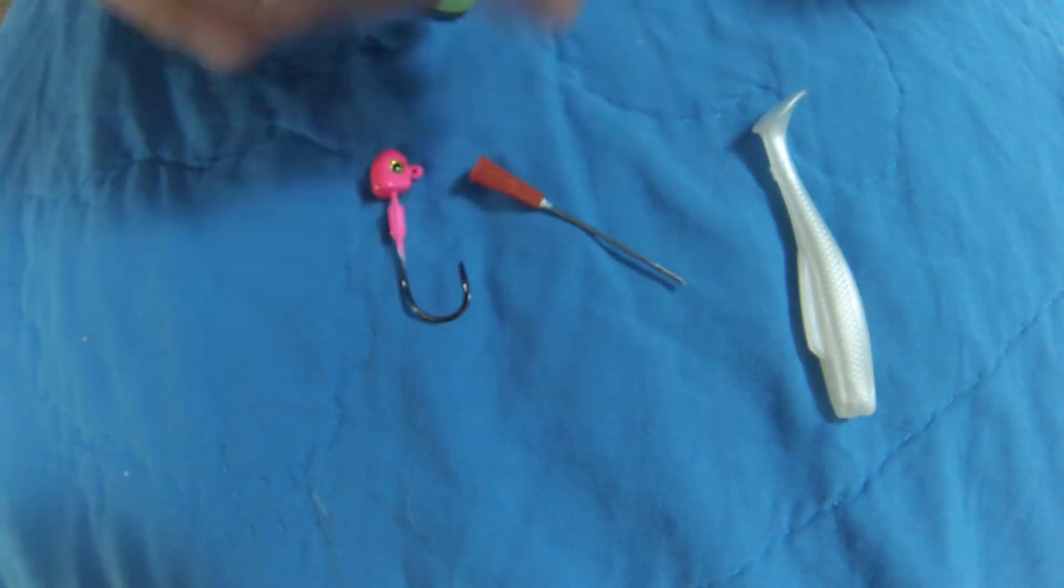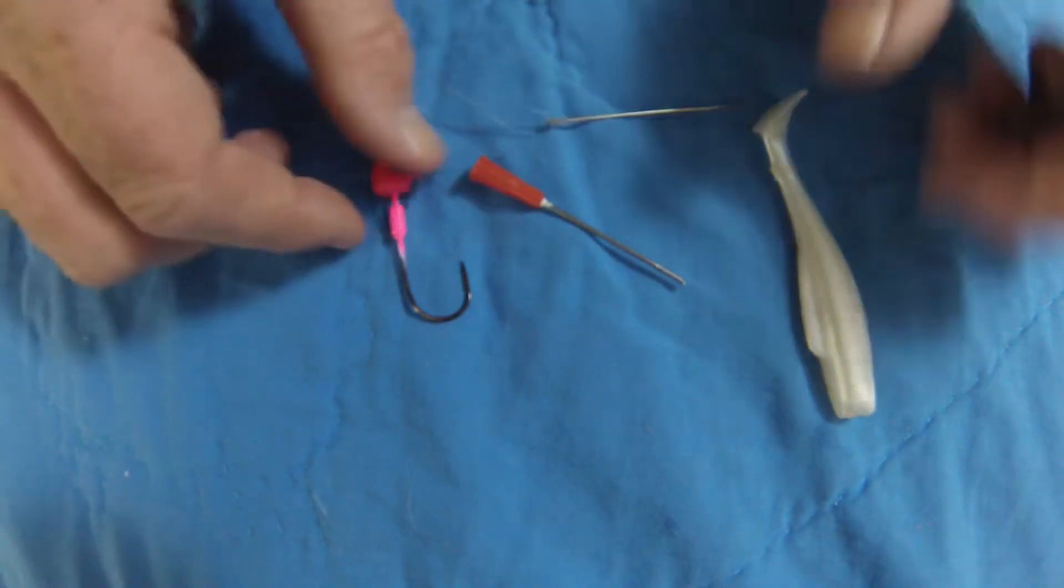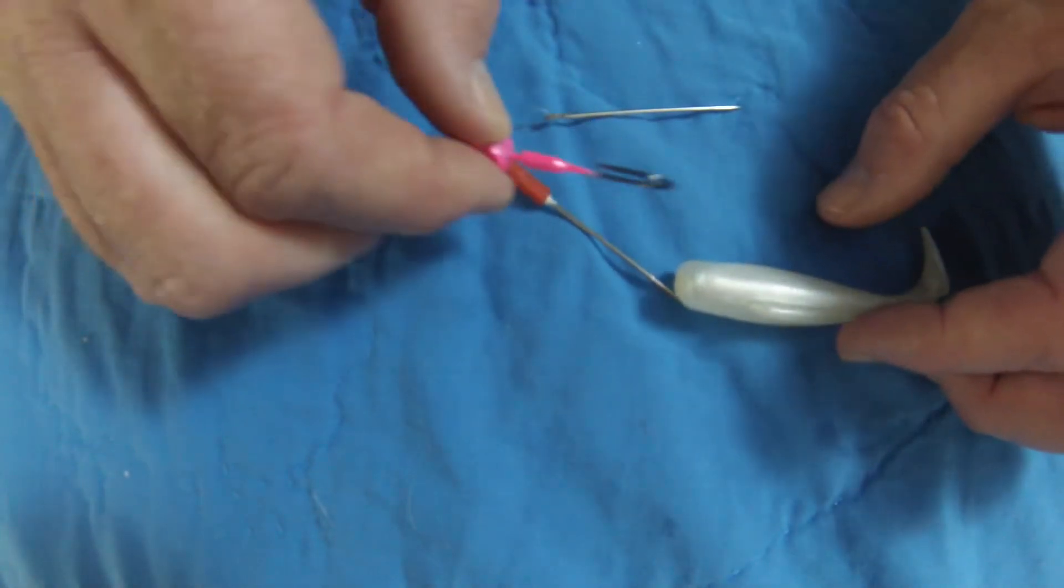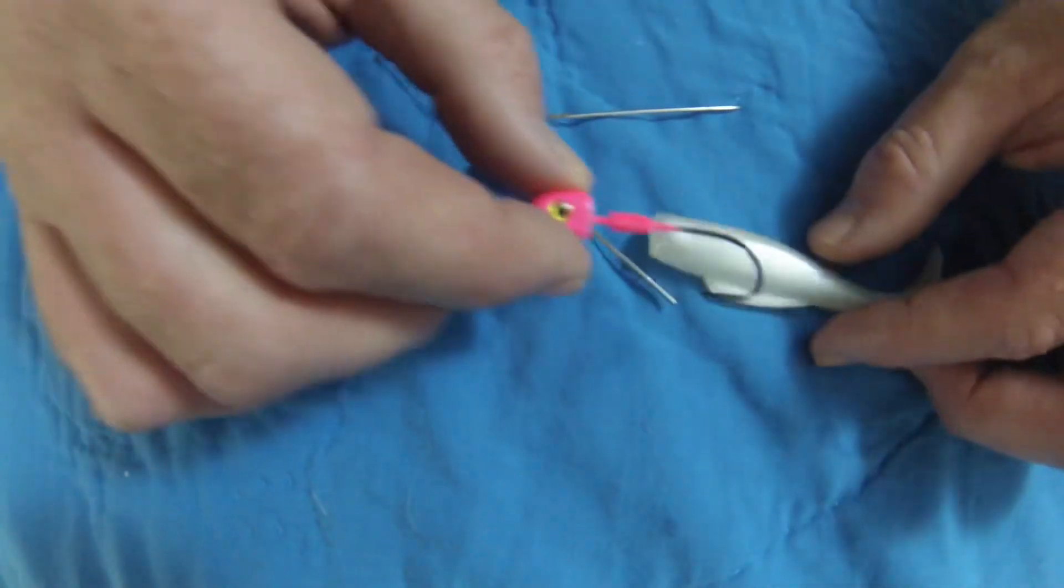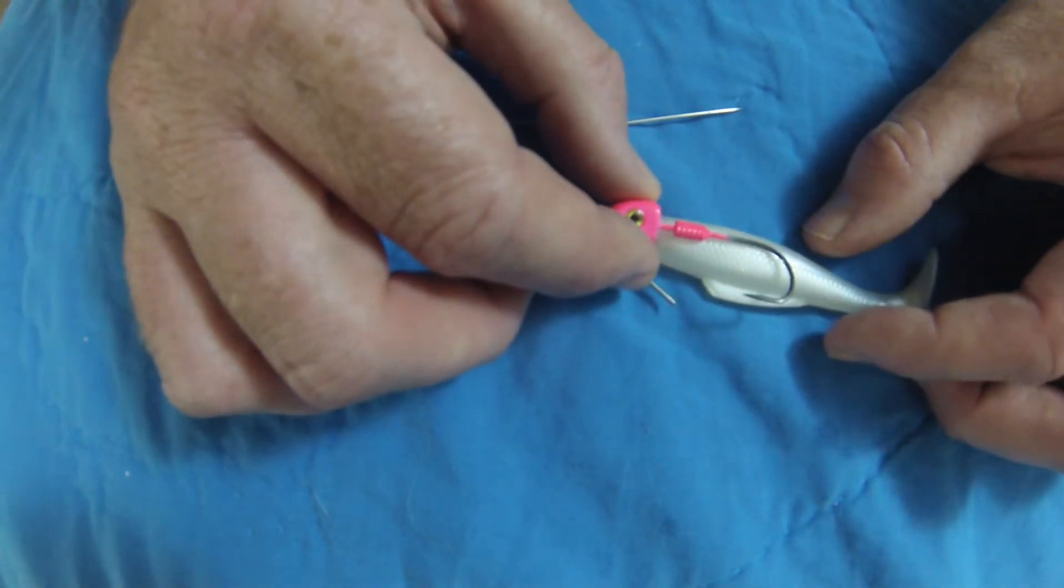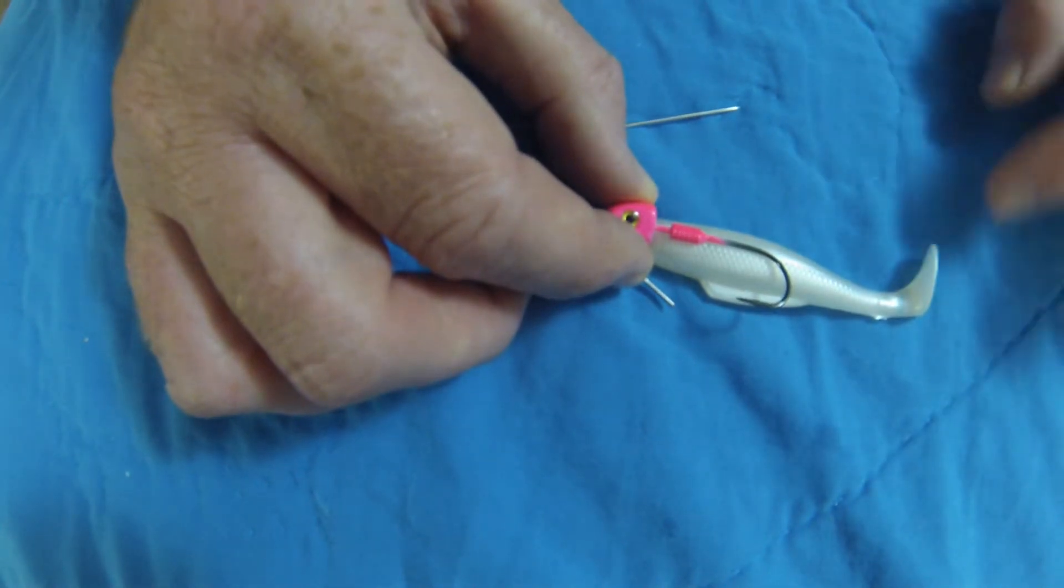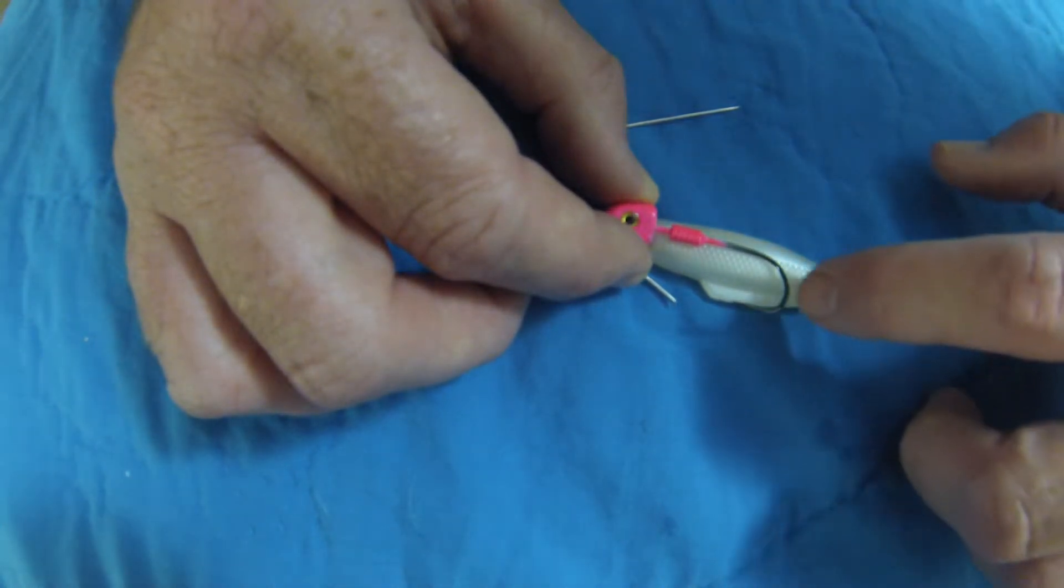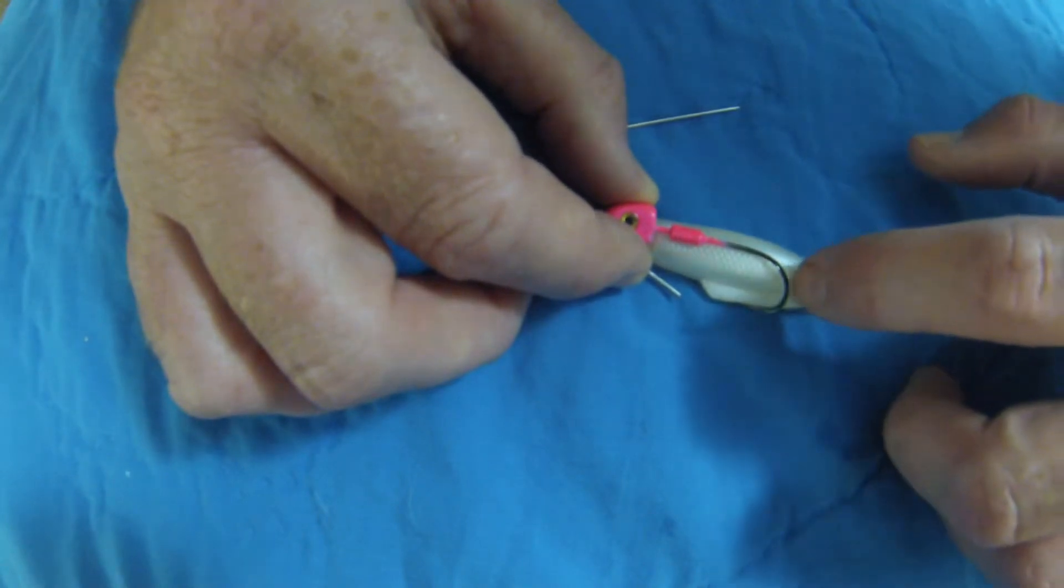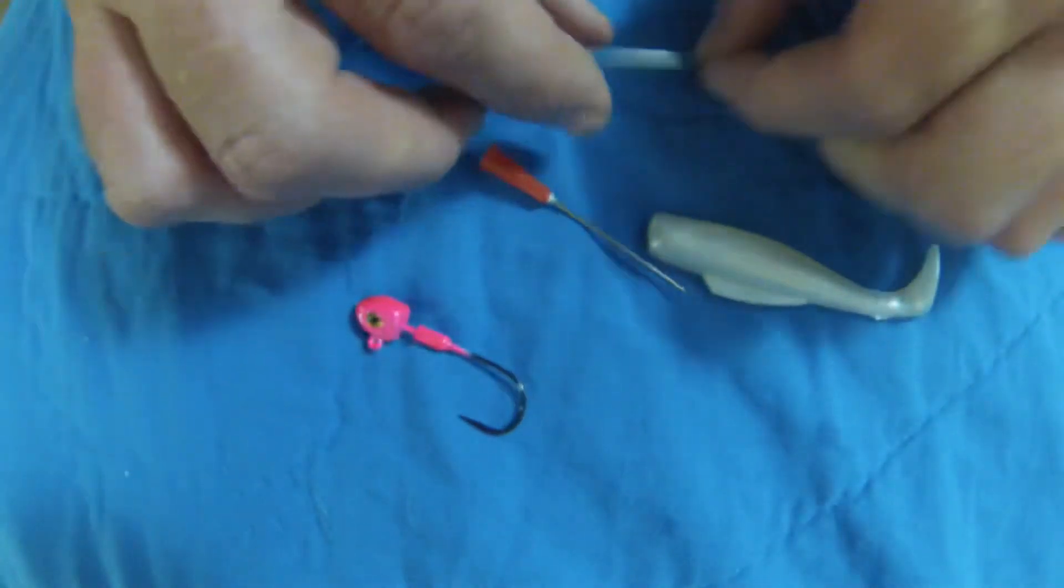To get it on perfectly straight, basically the process is this: I hold the hook against the soft plastic and it's gonna come out about 8mm up from where this fin ends. So then what I do...